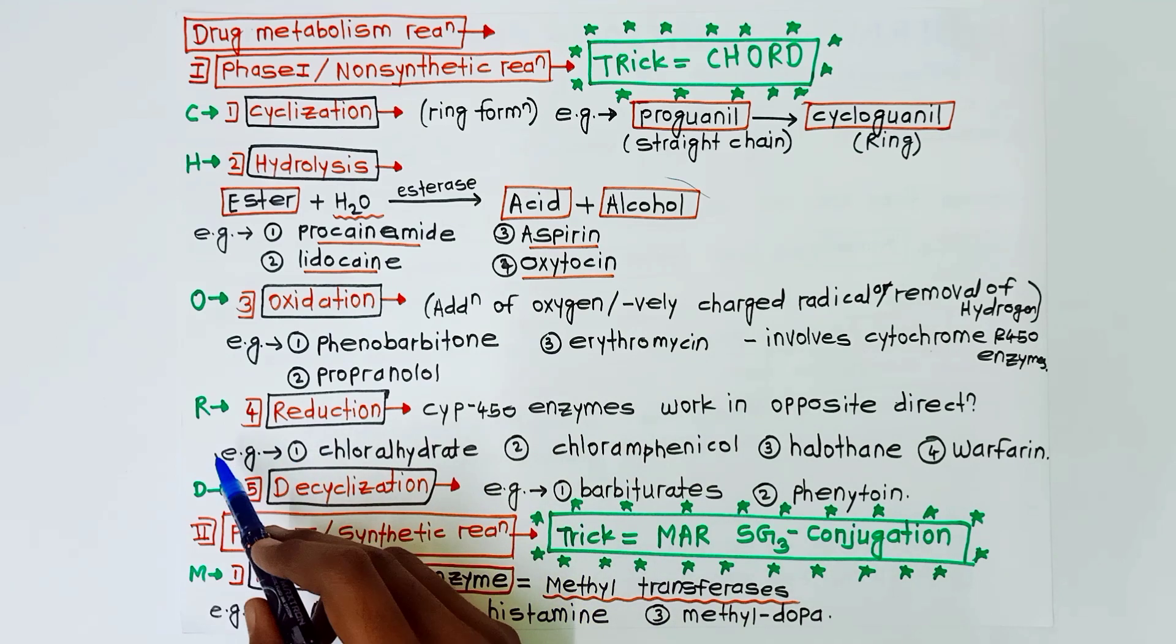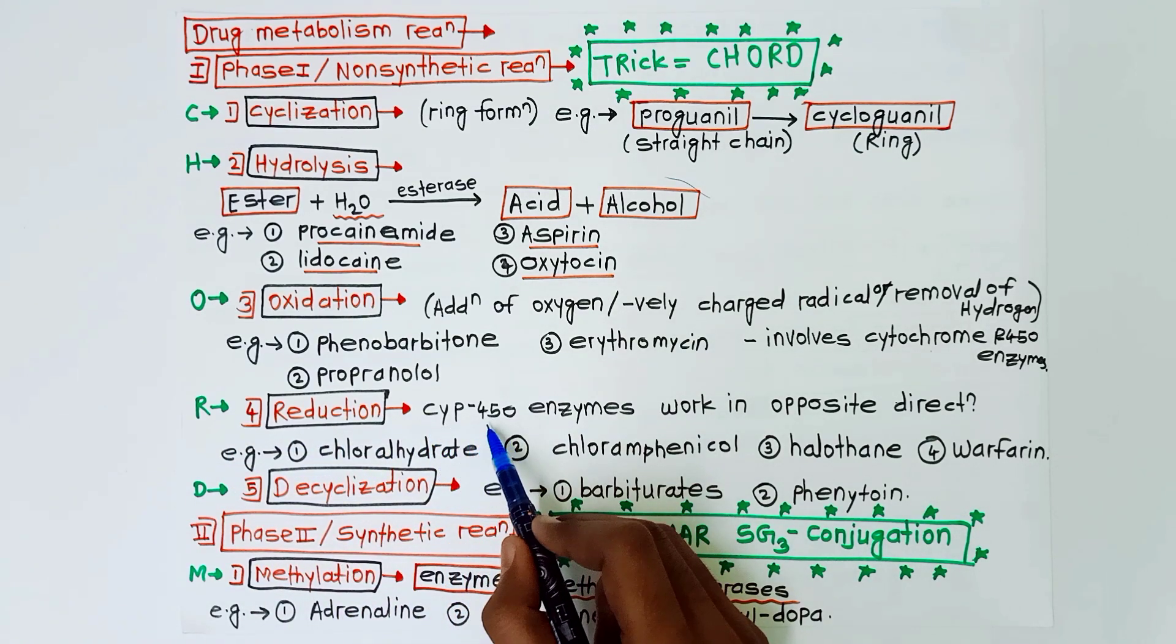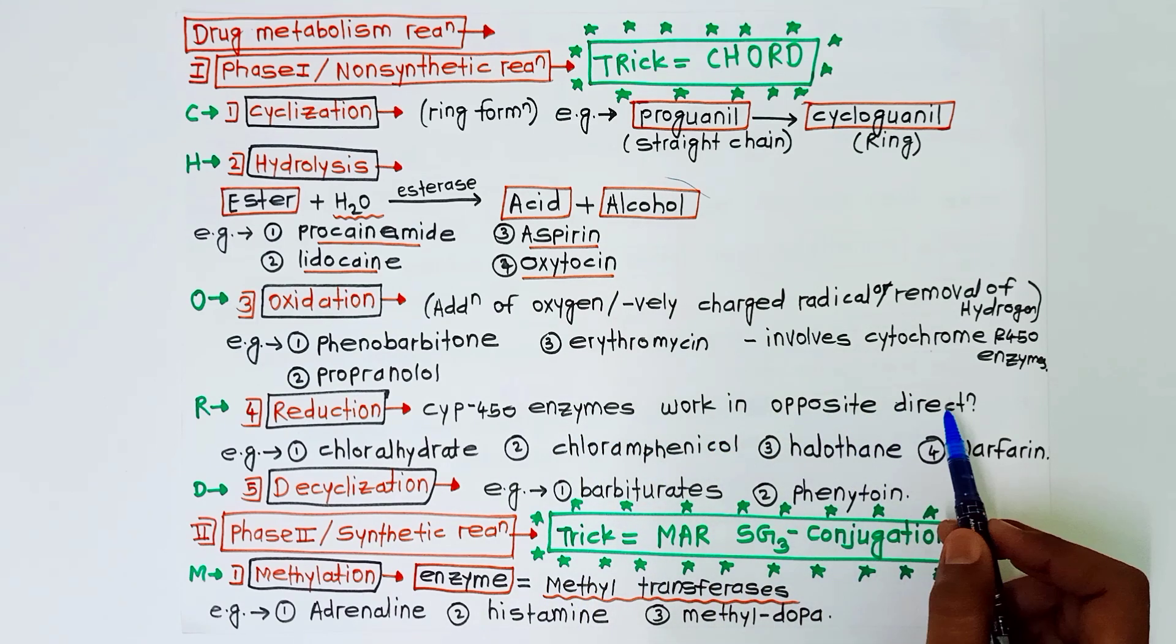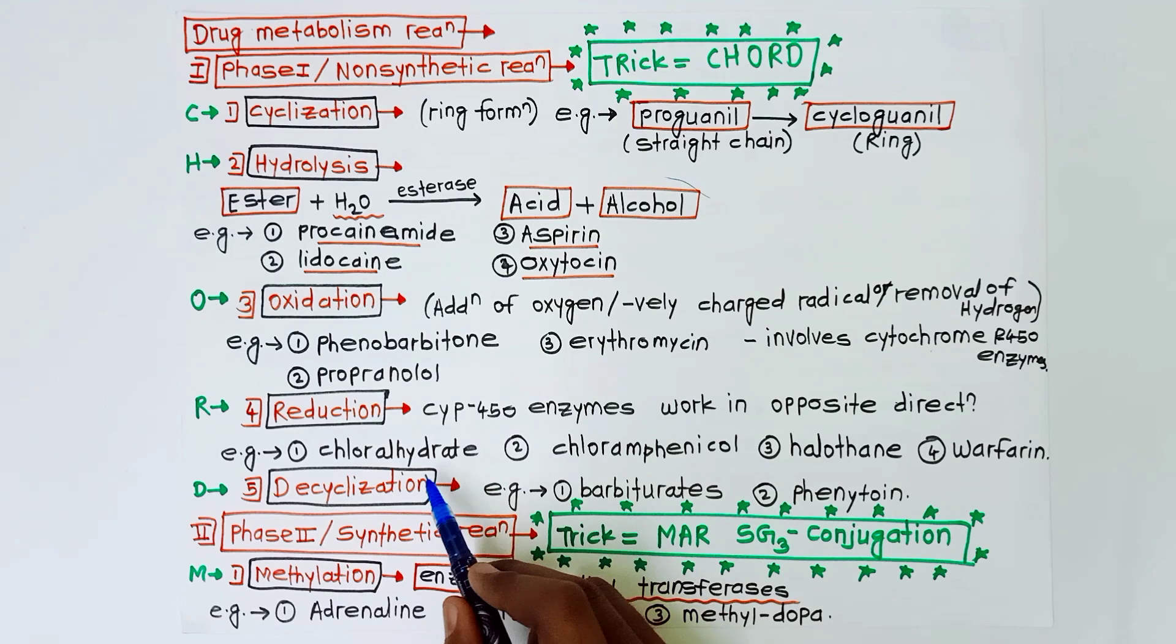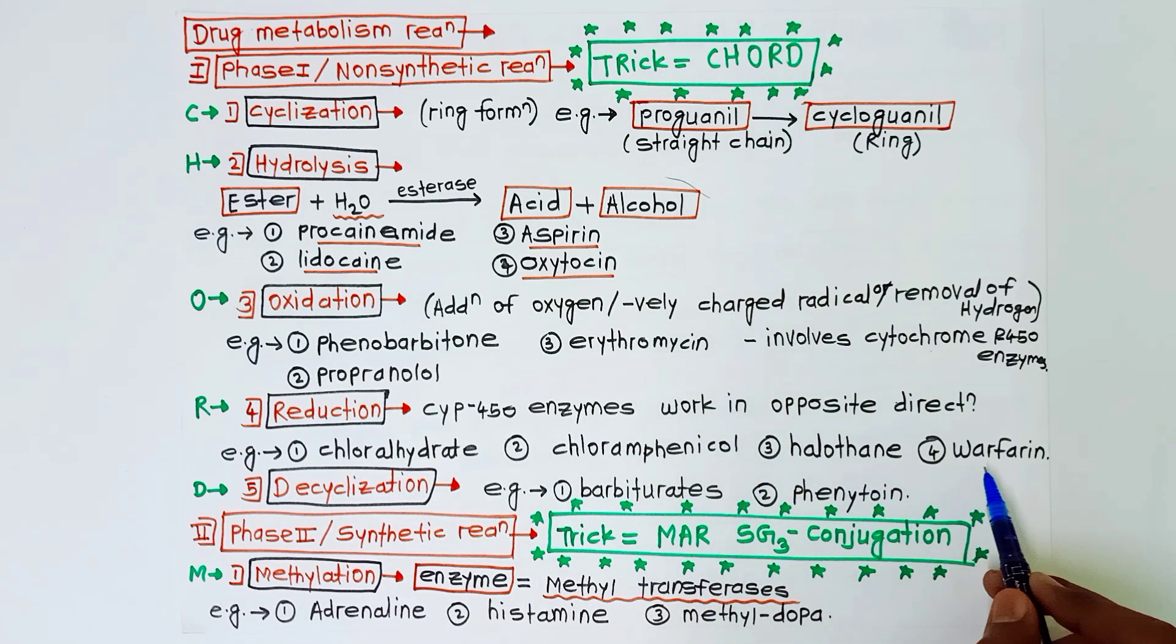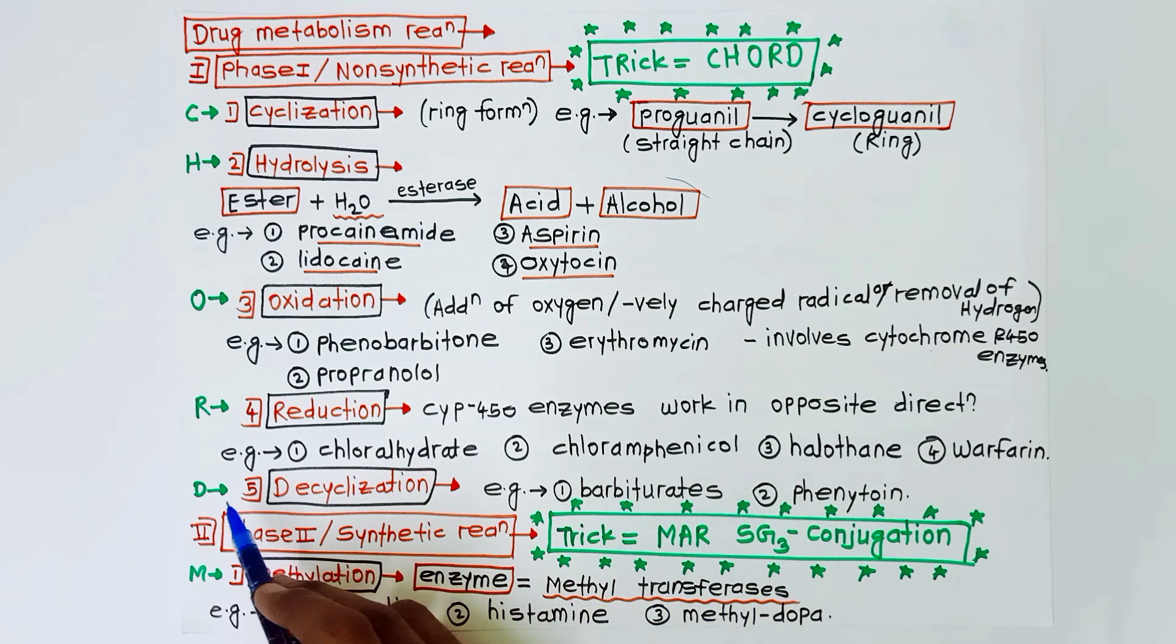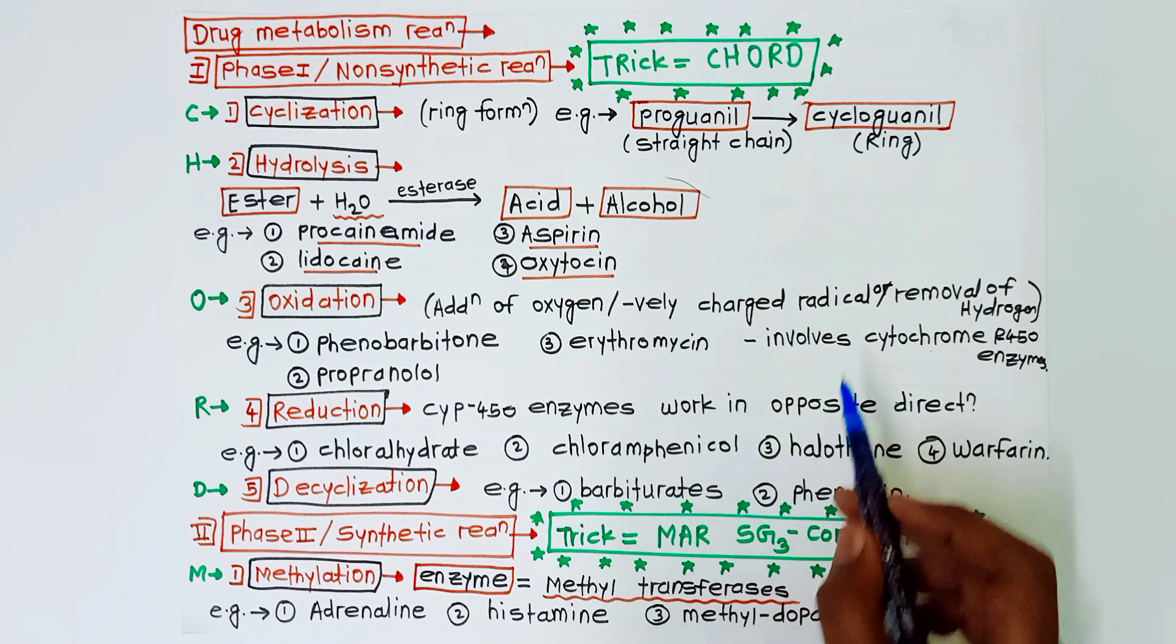Next is reduction. In this, cytochrome P450 enzymes work in opposite direction. Examples of reduction reactions are chloral hydrate, chloramphenicol, halothane, and warfarin. Next is D for decyclization. Example of decyclization is barbiturates and phenytoin. So basically it converts ring form into straight chain compounds.